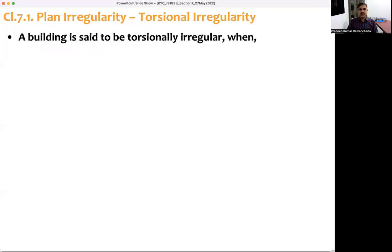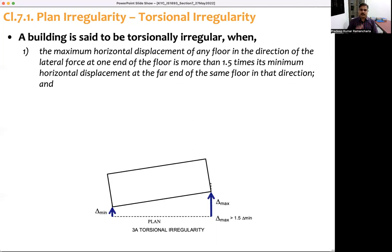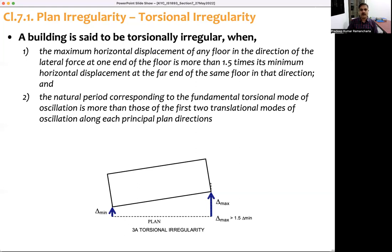A building is torsionally irregular when the maximum horizontal displacement of any floor in the direction of the lateral force at one end is more than 1.5 times its minimum horizontal displacement. When the force is applied at the center of mass, delta minimum is the minimum deflection and delta maximum is the maximum deflection at the edge of the diaphragm. If delta max is greater than 1.5 times delta minimum, the building is torsionally irregular.